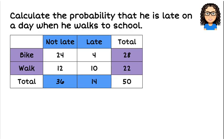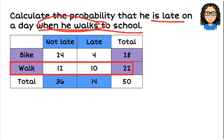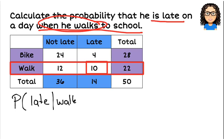Let's look at another question. Calculate the probability that he is late on a day when he walks to school. When he walks to school. That is known information. I'm saying that for sure here, it's a day that he has walked to school. So I need, this is conditional probability, I'm going to narrow it down and just look at the days where he's walked. So there were 22 days that he walked and I want to know from those 22 days, how often is he late? So he is late 10 times out of that 22. So our probability of being late given that he walks to school is 10 out of 22 or as a decimal 0.4545.